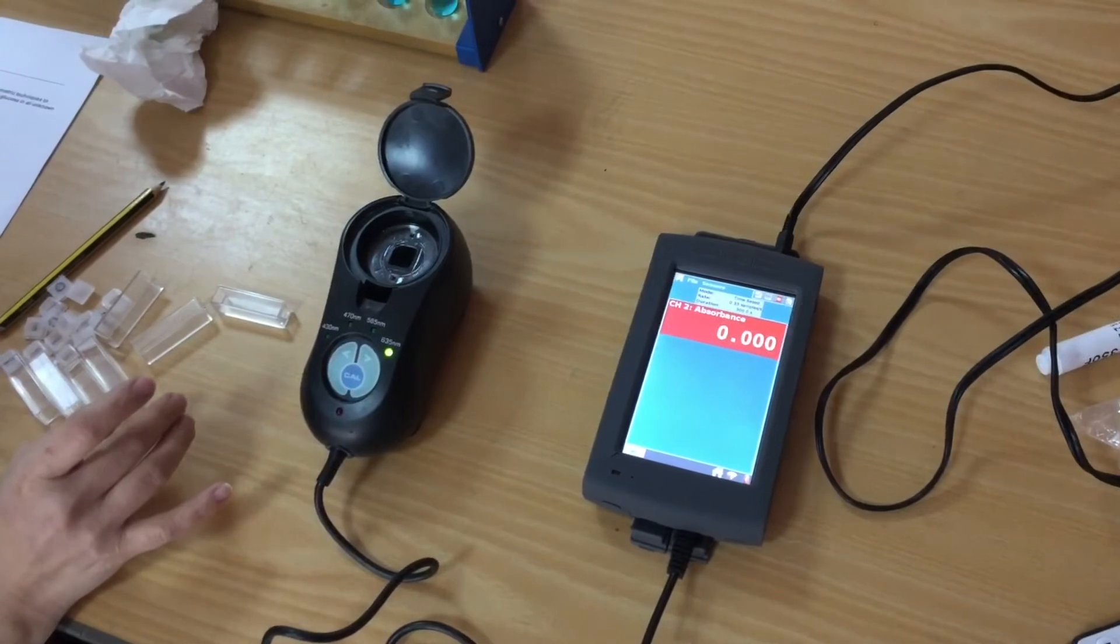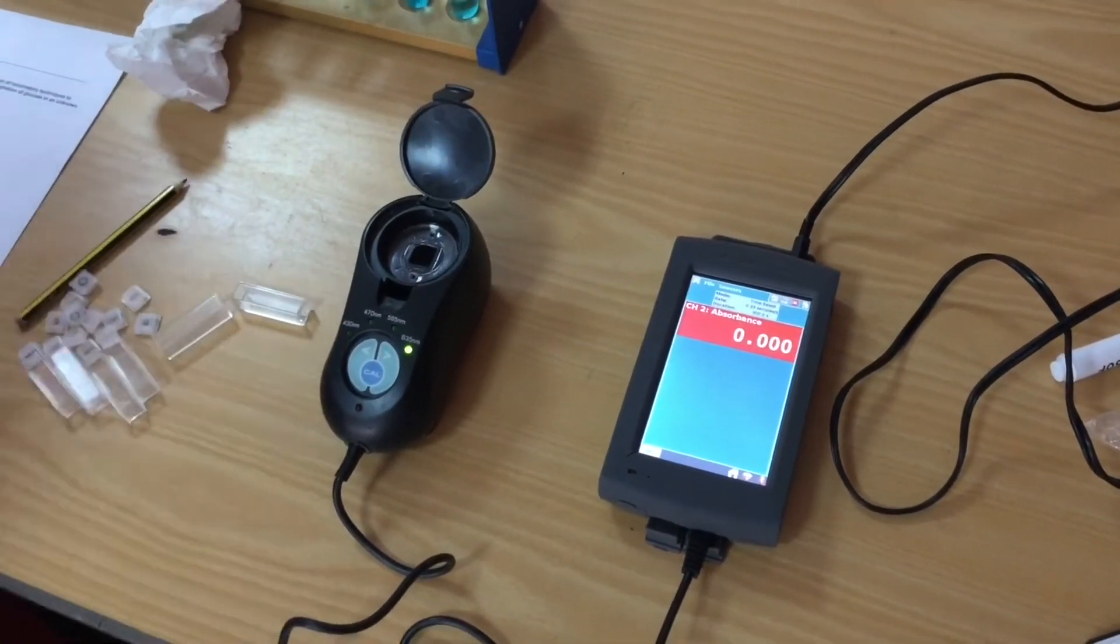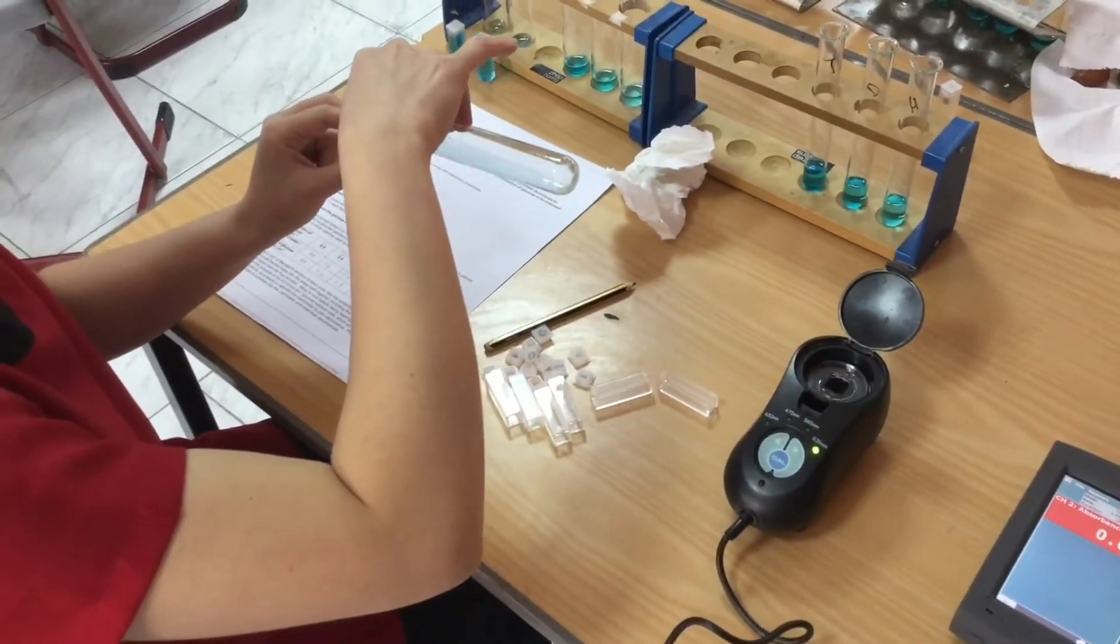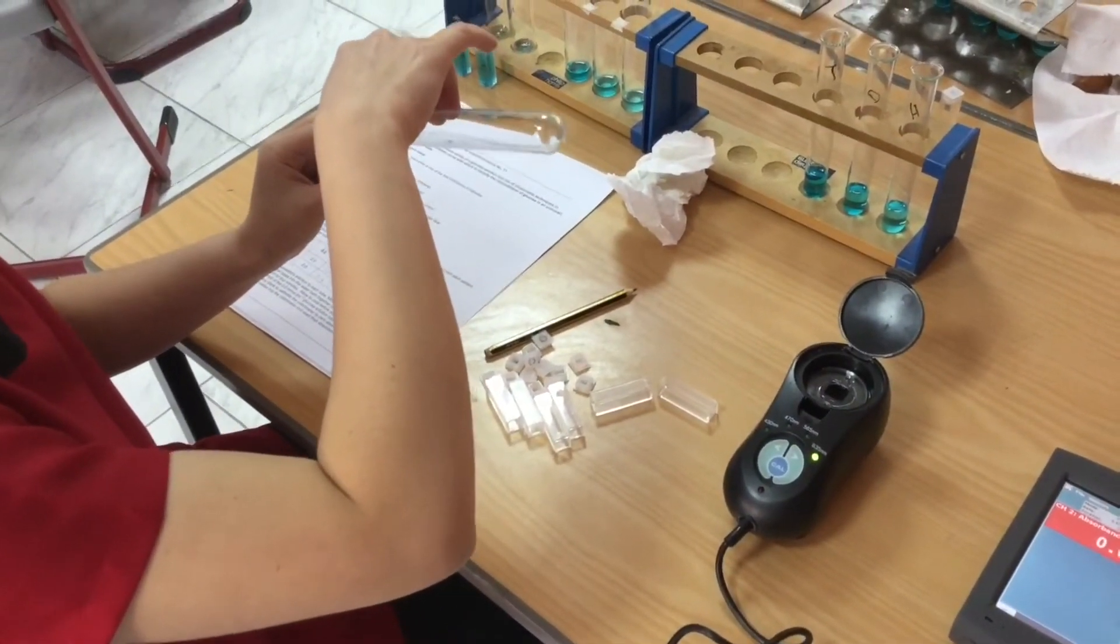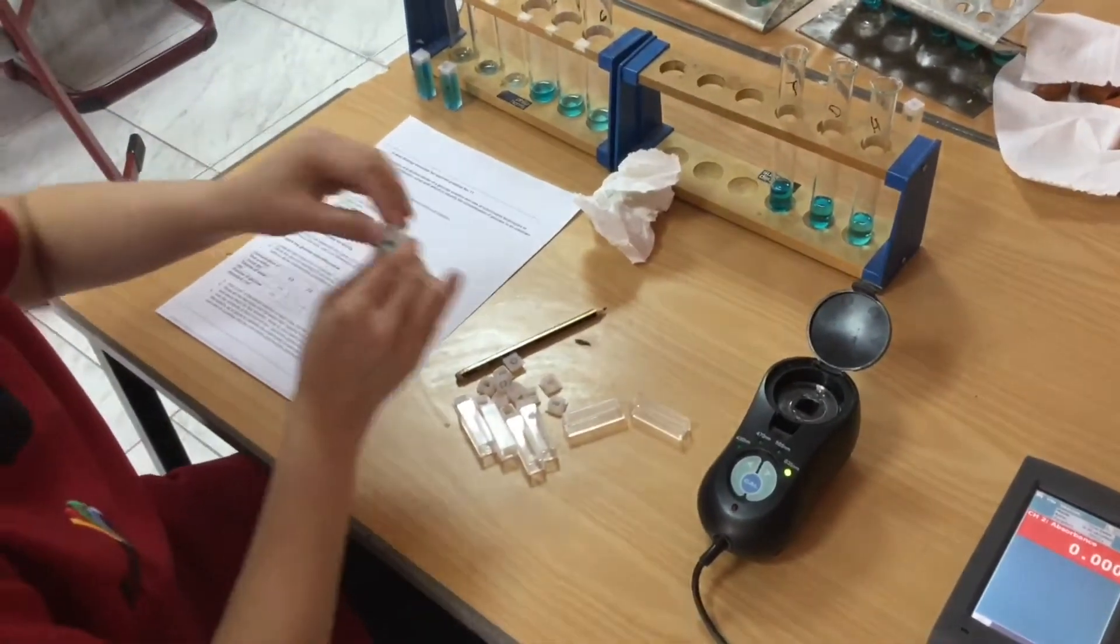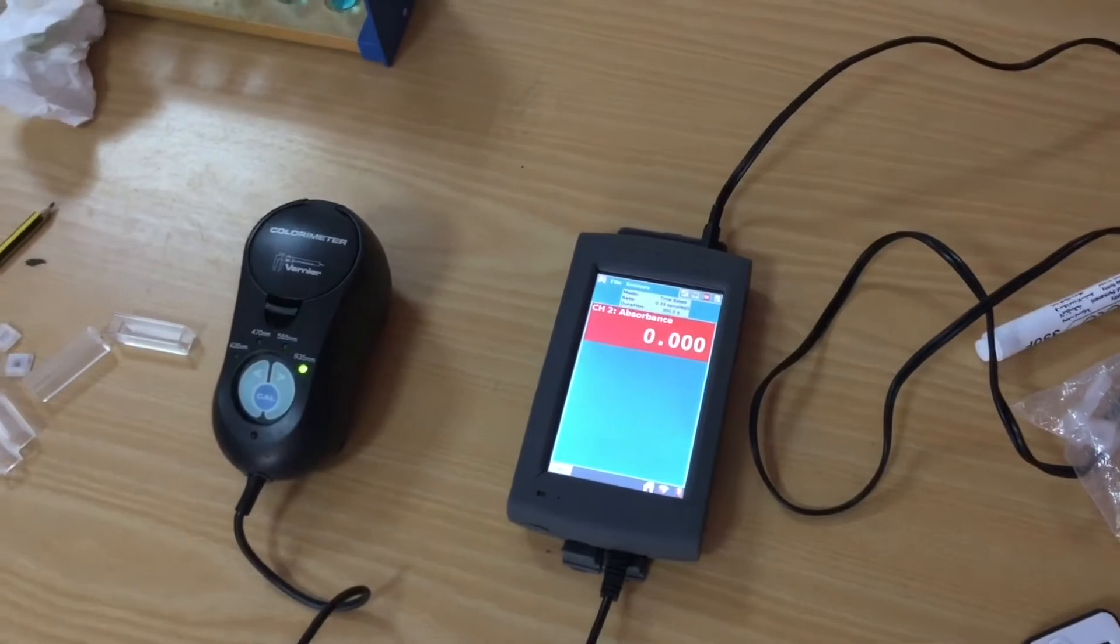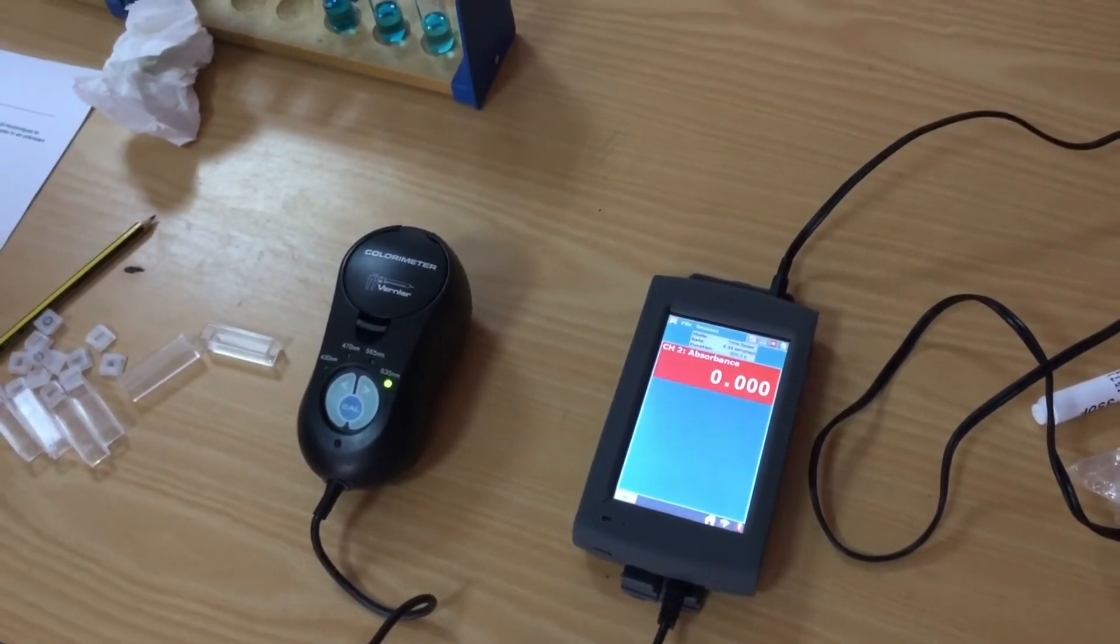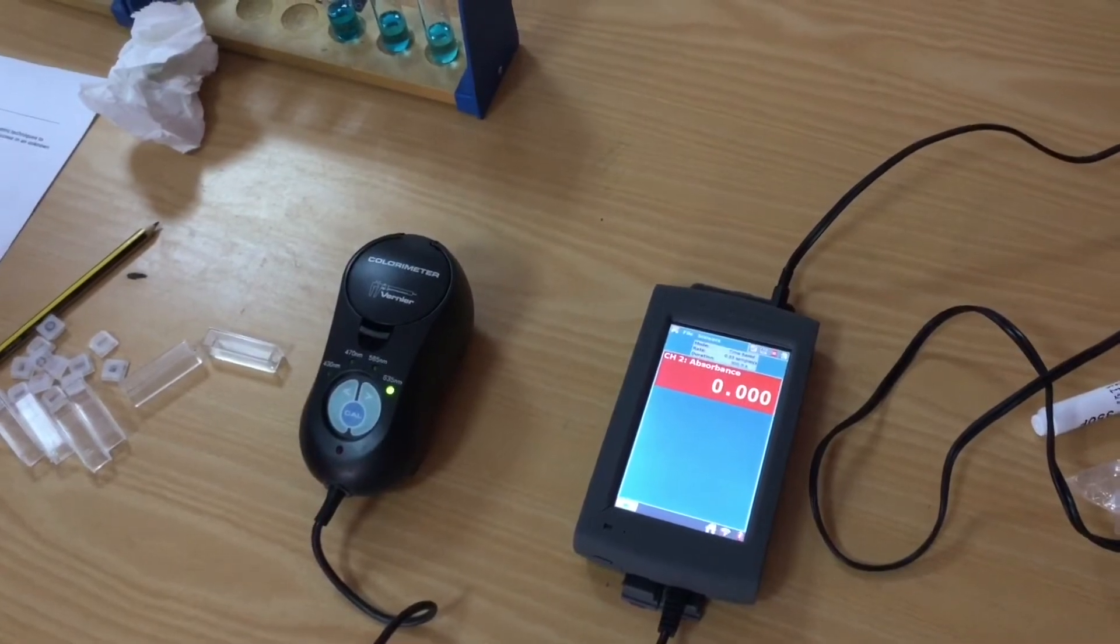I now have the results for my calibration curve which can be plotted. Remember when plotting a graph you need to use at least half of the page of graph paper. Your points are plotted with an X, not a dot. And if we can see that it's a clear linear relationship we can draw a line of best fit.